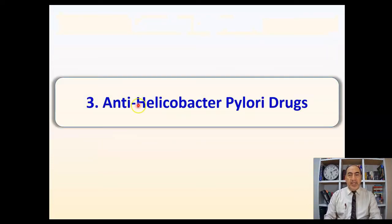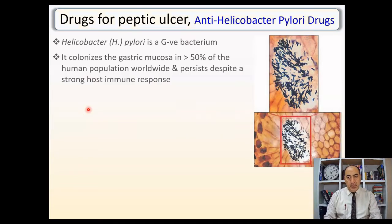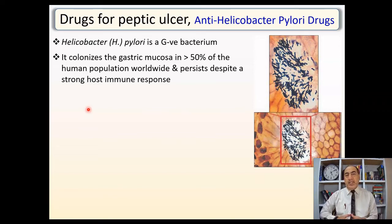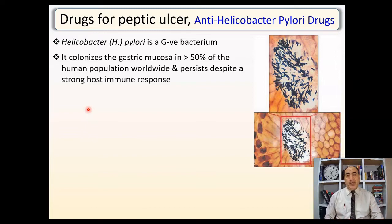We will start with the anti-Helicobacter pylori drugs — numbered three because previously we covered H2 blockers and proton pump inhibitors. H. pylori is a gram-negative bacteria that colonizes the gastric mucosa in more than 50% of the human population worldwide. It persists despite the strong host immune response and the very aggressive environment — surrounding HCl at pH of about 1, very corrosive, plus pepsin and other harsh factors — yet this bacterium can live within this environment.